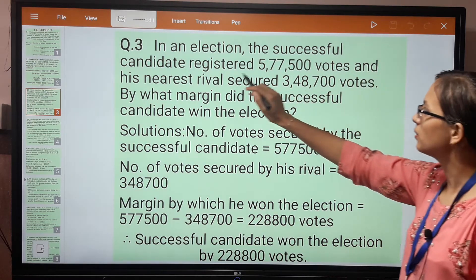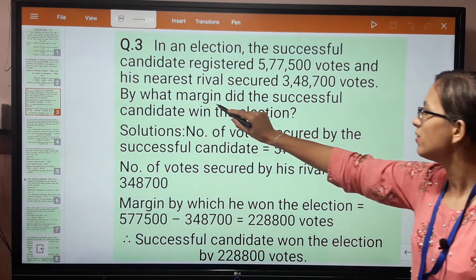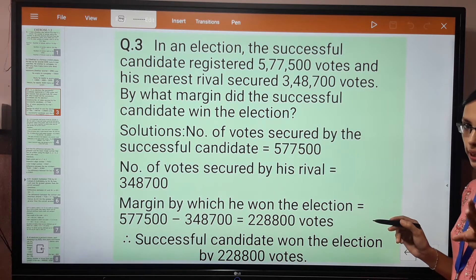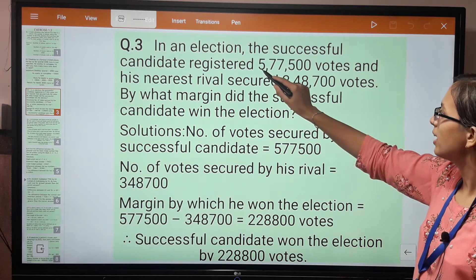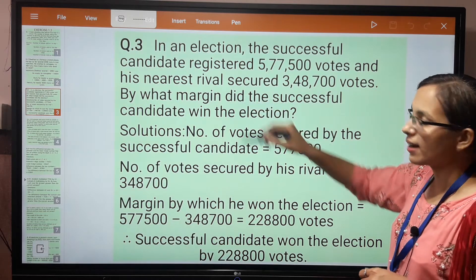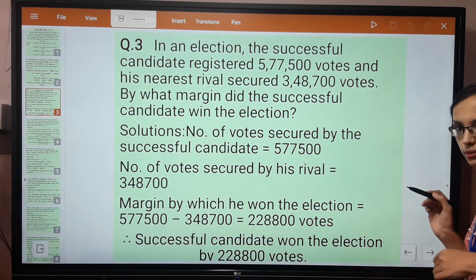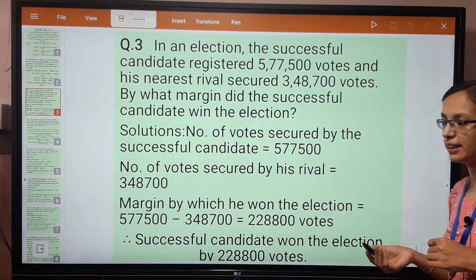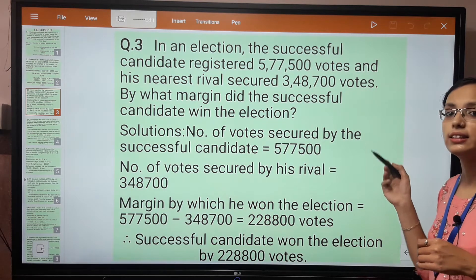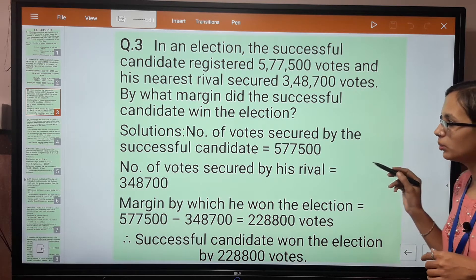Question number 3: In an election, the successful candidate registered these votes and his nearest rival secured these votes. By what margin did the successful candidate win the election? There were two candidates in the election. The one who was successful got 5,77,500 votes, and his rival who lost got 3,48,700 votes. The question asks by how many votes did the winning candidate win the election.